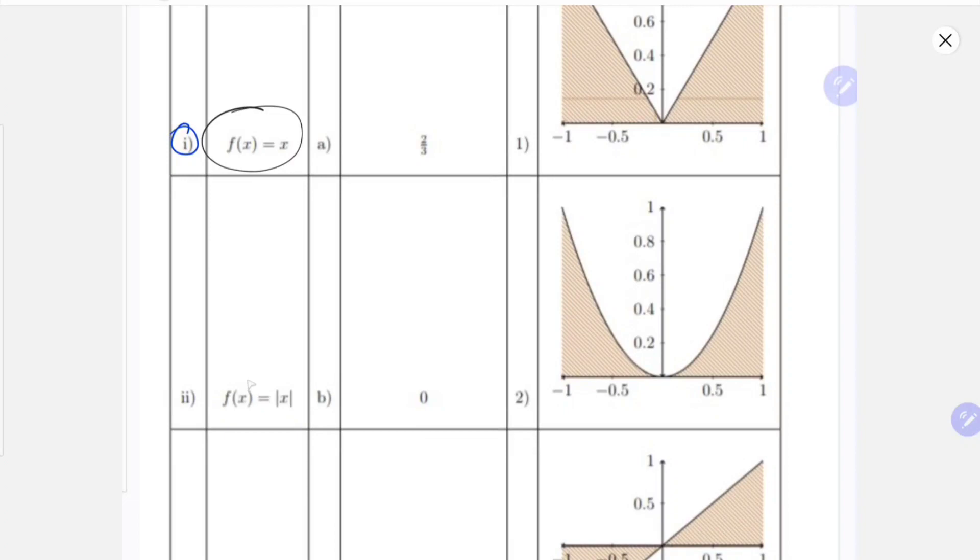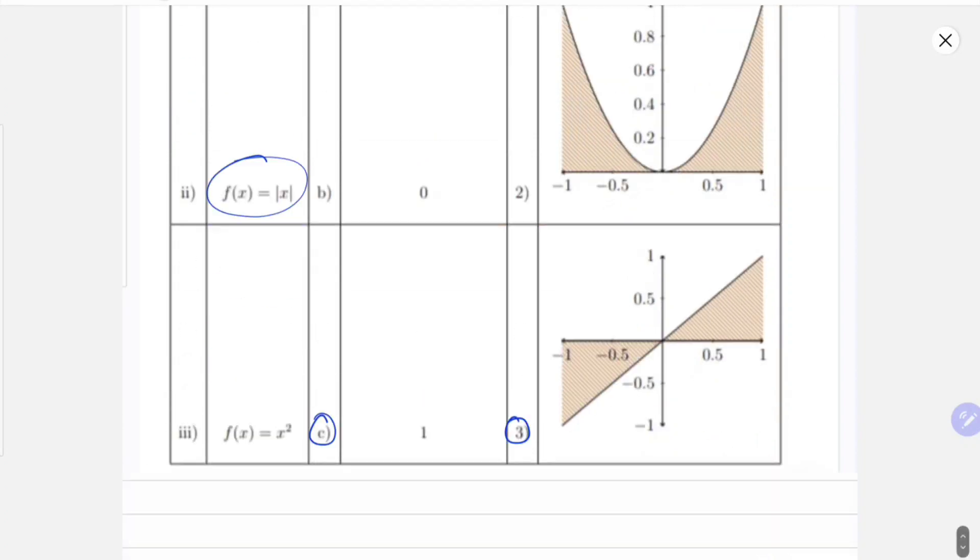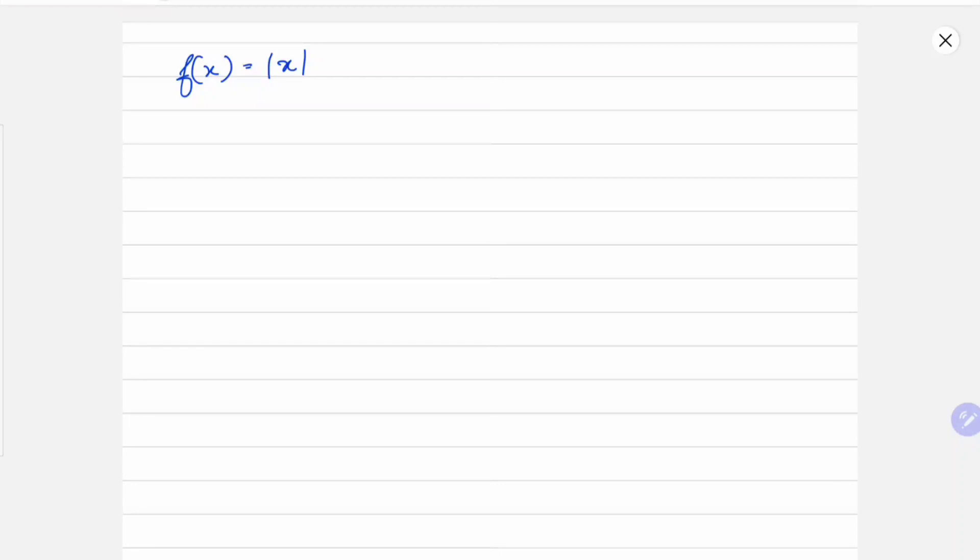Now let's move to the second one. We are given f(x) equals to mod x. Let me show you how you can do this directly through graphs. First we'll draw the x and y axis, and then we'll draw f(x) equals to x.